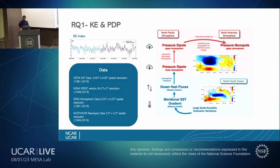Second, in our original work on research question one, we used causality analysis — particularly Granger causality analysis — where we generated a monopole index for the downstream patterns, and conducted that analysis to see which region of sea surface temperatures in the ocean causes this monopole index. We found that it is the Kuroshio Extension region.